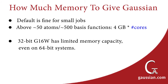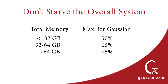As a general guideline, if total system memory is 32 GB or less, the maximum you should allocate to Gaussian is 50 percent — in other words, 16 GB. If total system memory is between 32 and 64 GB, you can safely allocate about two-thirds of the total to Gaussian. For systems with more than 64 GB, you can allocate up to about 75 percent of the total memory.